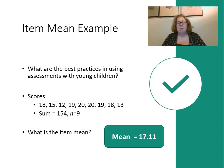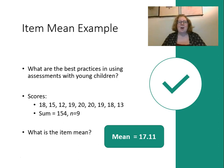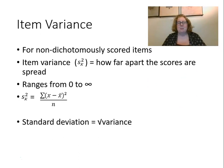So out of 20, my students scored about a 17. If I look at the range though, the students who scored 12 to 15 are the ones I'm most worried about. But remember from the beginning of our course how measures of central tendency don't tell us the whole picture — we also want measures of variability, which is item variance.